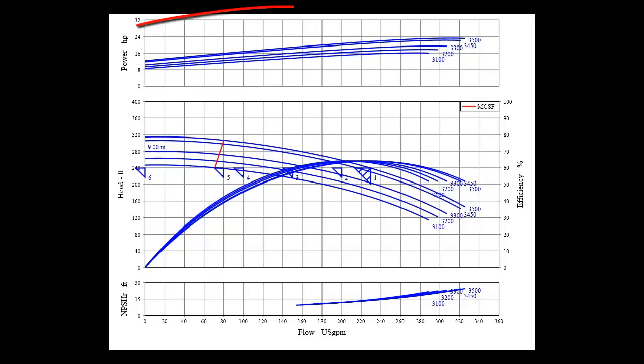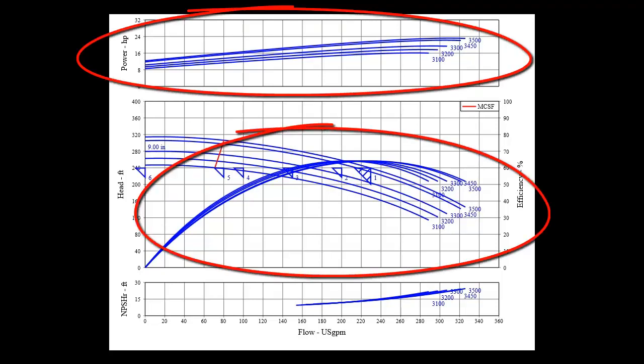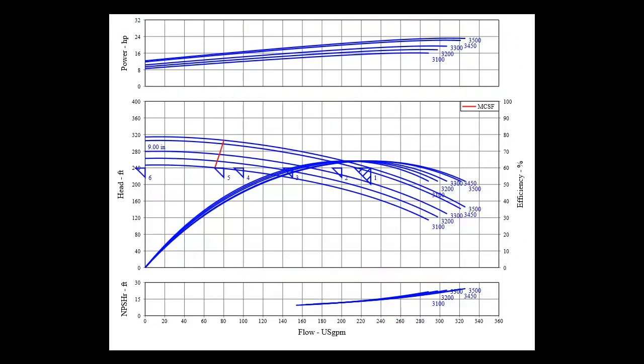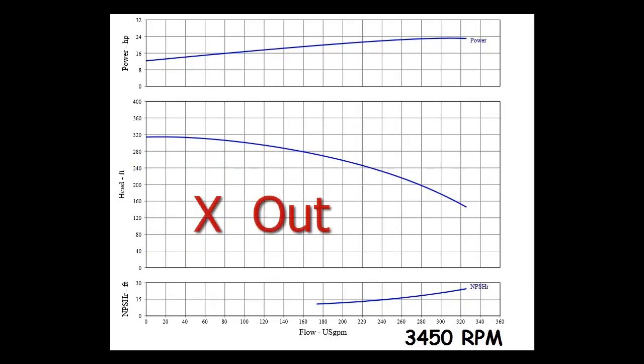Pump curves can show the horsepower, the efficiency, and the net positive suction head required. It can also have multiple performance curves depicting different impeller diameters and or multiple pump speeds. Don't let any of this confuse you. Most pump companies electronic catalog will let you X out the parts you don't need to see. In most cases we only need to look at the performance and horsepower curve for a single speed pump with a set impeller diameter.